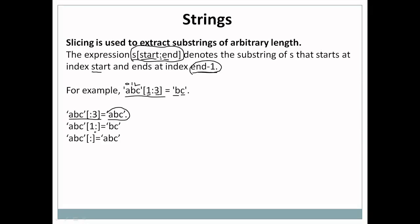Similarly we can declare start but not declare the end, like 'abc'[1:]. In such cases end is considered as the length of the string. The length of 'abc' is 3, so end is 3. Starting at 1 we have 'b', and up to position 2 we have 'c'. So the output is 'bc'.